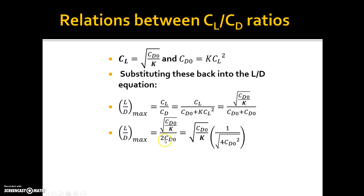So CD0 over K, CD0 over K all over 2CD0. Just bring this out to one side and 2CD0 is the same thing as 1 over square root of 4CD0 K squared. So if I got the square root of that I would just get 2CD0.